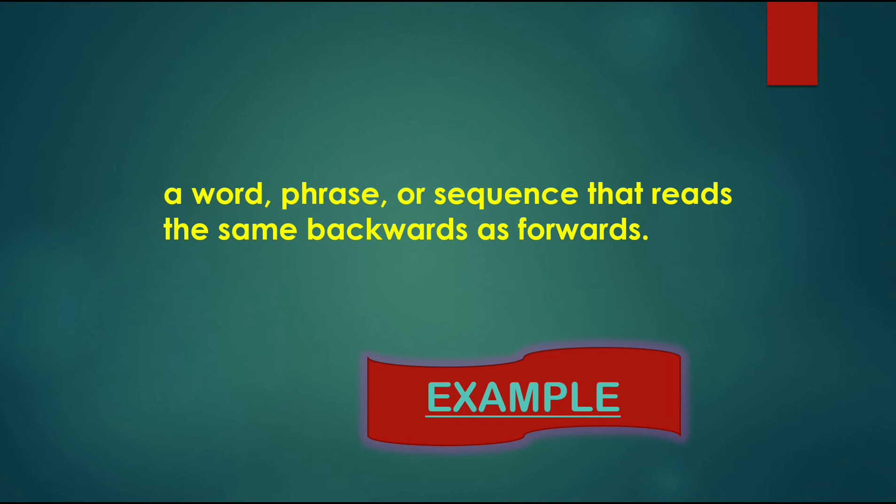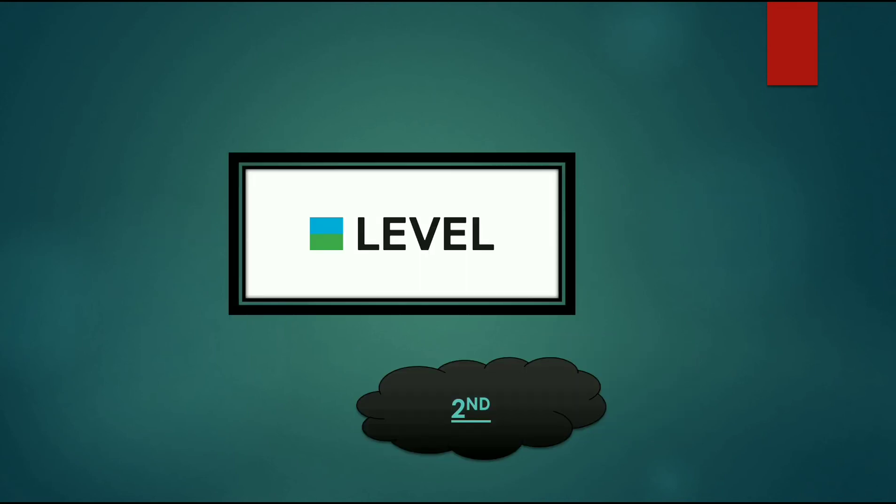While getting a clear picture of the word, let's look at the example. We have level. When a person reads from forward as well as from backward, the spelling remains the same. That is, when you are reading from left to right or right to left, level is level.